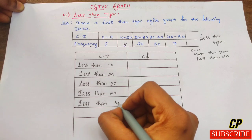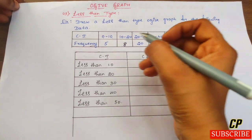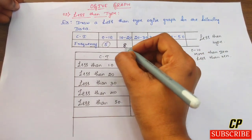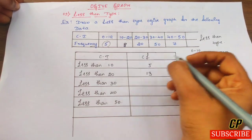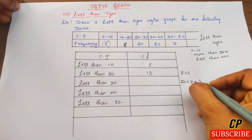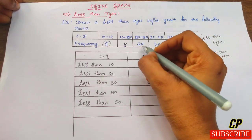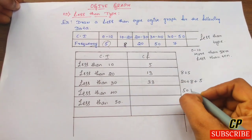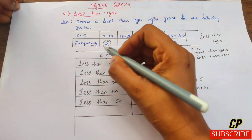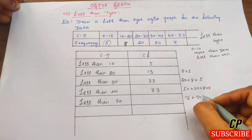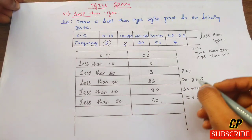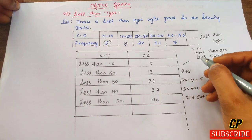We compute the cumulative frequencies: less than 10 is 5, less than 20 is 8 plus 5 equal to 13, less than 30 is 20 plus 8 plus 5 equal to 33. This gives us the less than type cumulative frequency table.